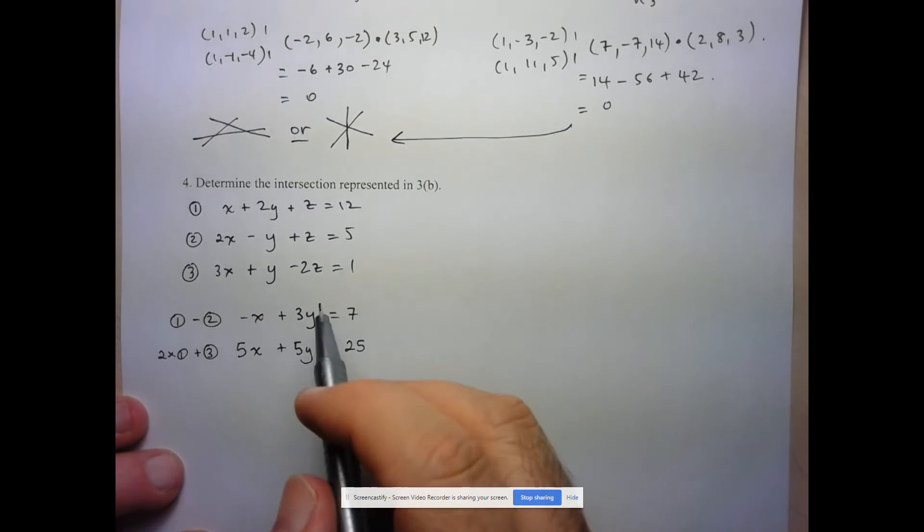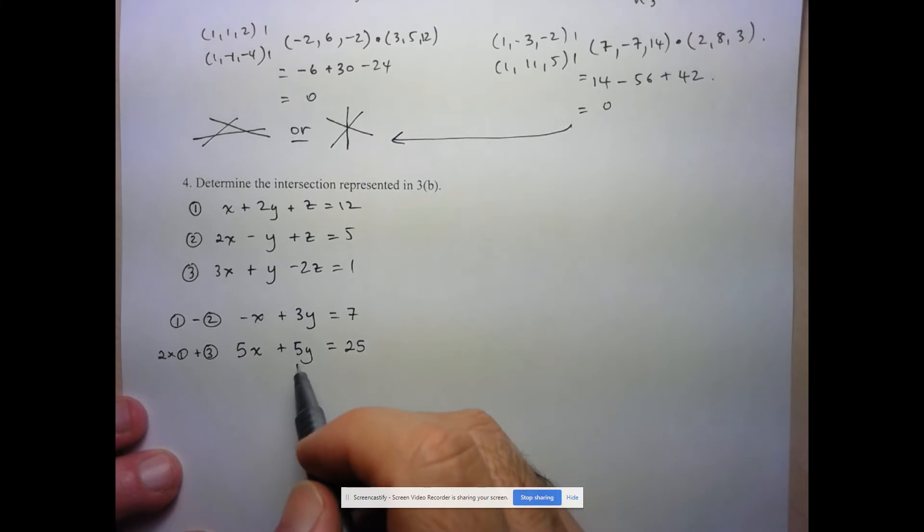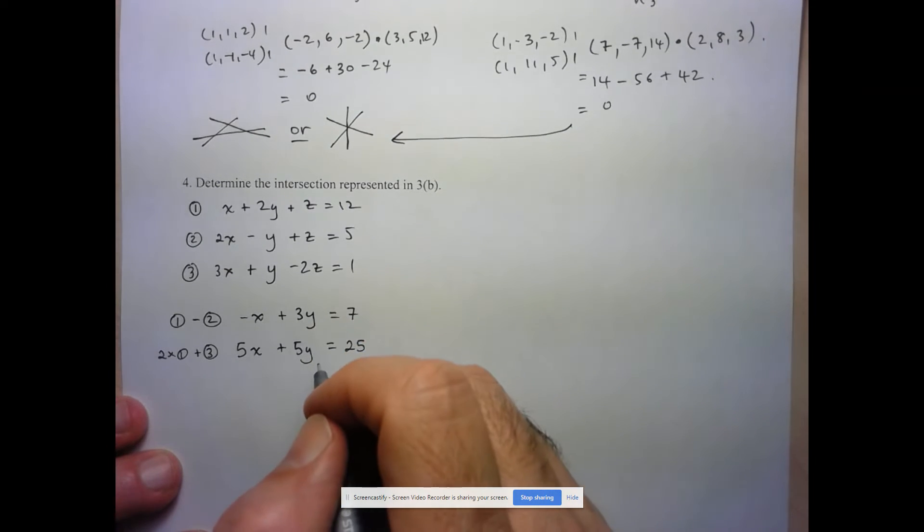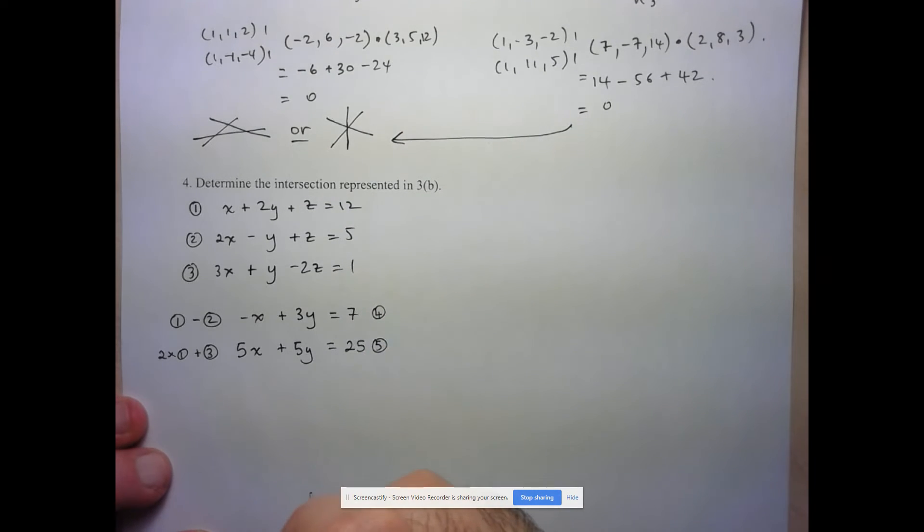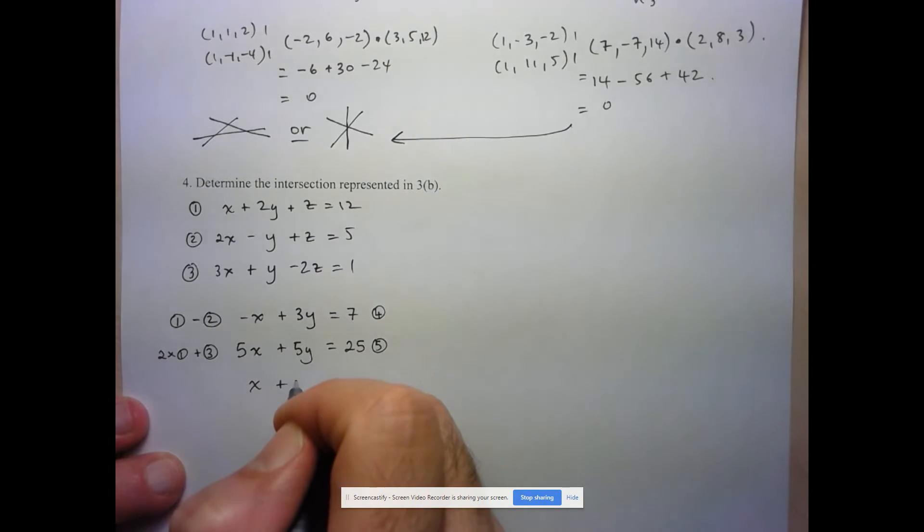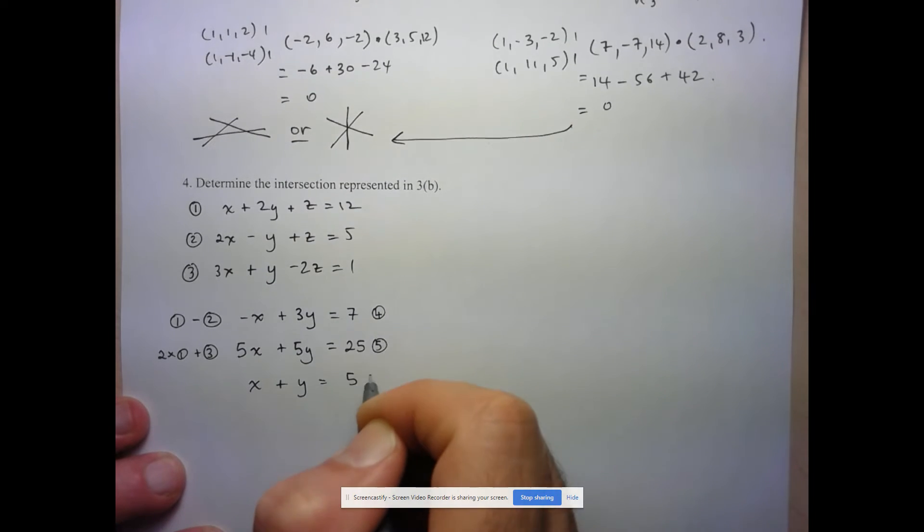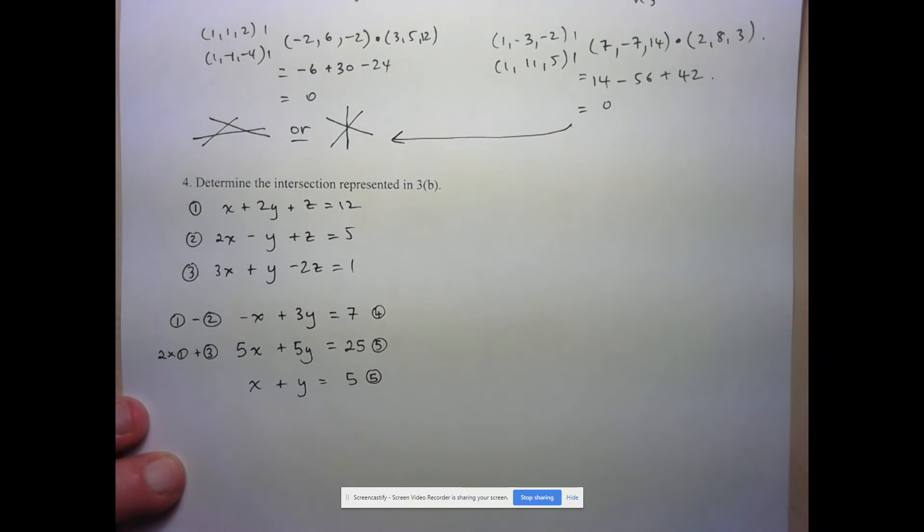So now what I have is a system of equations with only two variables. So I'm going to now solve this system. I'm going to call this equation 4 and call this equation 5. Now before I go on, I realize that equation 5 can be simplified. I can divide both sides by 5 and I get x plus y equals 5. So this is my new equation 5 that I've simplified.